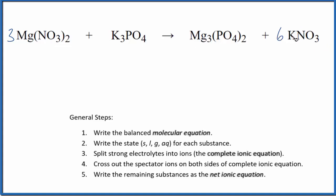Those are balanced, but I have six potassiums. How about a two as our coefficient here. Two times three is six. We also have two phosphates, and here we have two phosphates as well. So that is the balanced molecular equation.